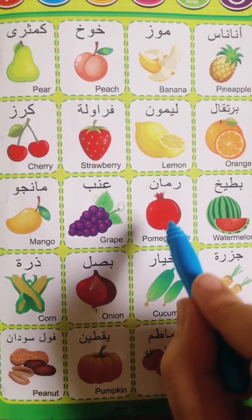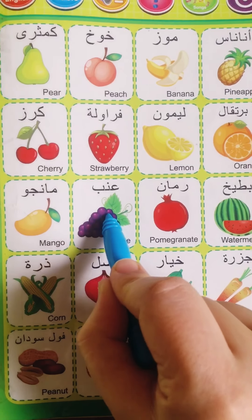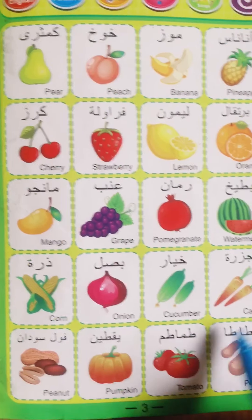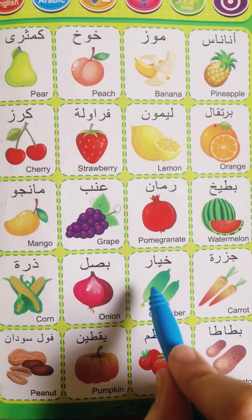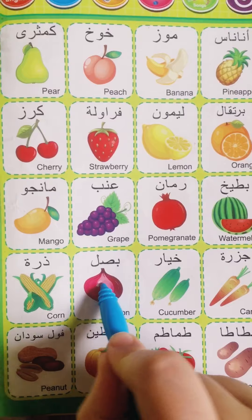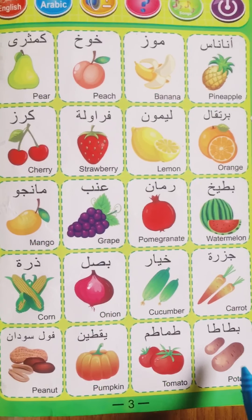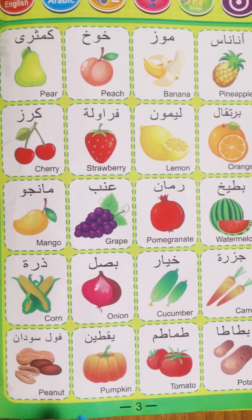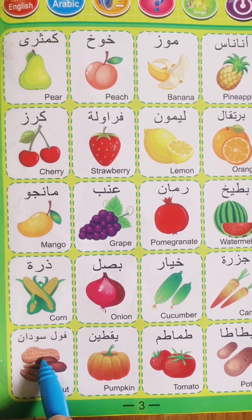Watermelon, pomegranate. Grape, mango. Carrot, cucumber, onion, corn, potato, tomato, pumpkin, peanut.